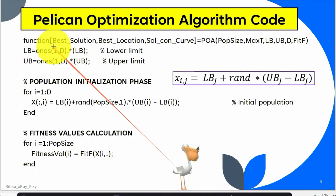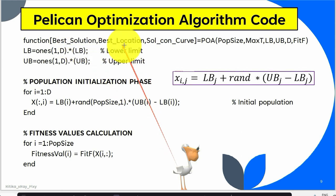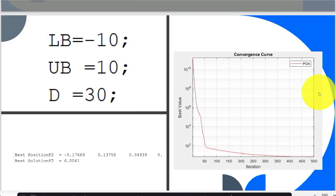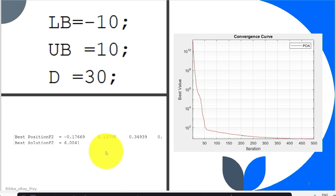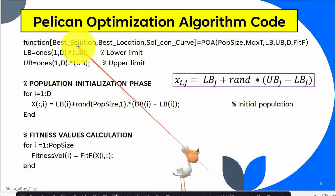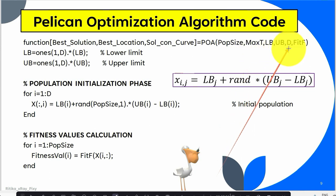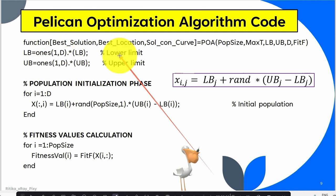Next, we create another file for the Pelican Optimization Algorithm. The function name is 'poa' (Pelican Optimization Algorithm). When we run this code, we need: the best solution (best fitness value), the best location (best position), and the convergence curve. This function will return best solution, best location, and the convergence curve. The input parameters include population size, maximum number of iterations, lower bound, upper bound, dimension, and 'fit_t' — the fitness function.